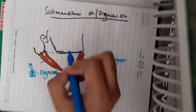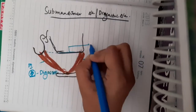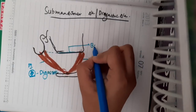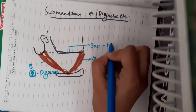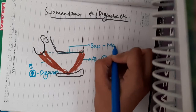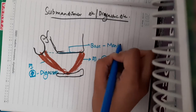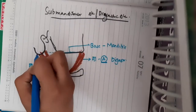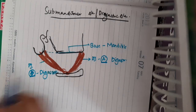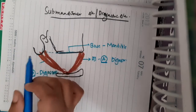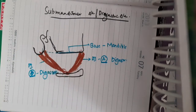The base is formed by the base of the mandible and the imaginary line joining the mandible with the mastoid process. The roof is formed by the deep fascia, that is the investing layer of the deep cervical fascia.